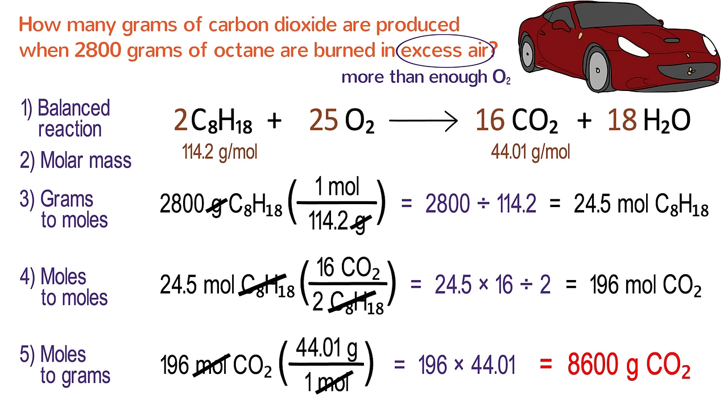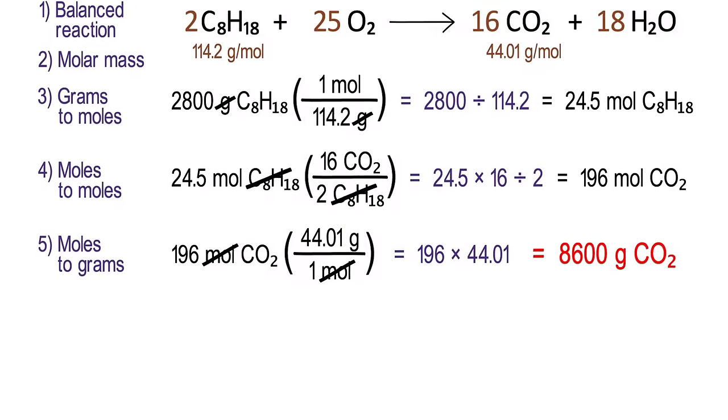Okay, back to the problem. There were a lot of steps in this problem. Is there any way that we could simplify it? Yes. Instead of having three separate calculations, we can combine those three conversions into one big calculation. Start off once again by writing down 2,800 grams of C8H18. Only this time, multiply it by three conversion factor fractions.